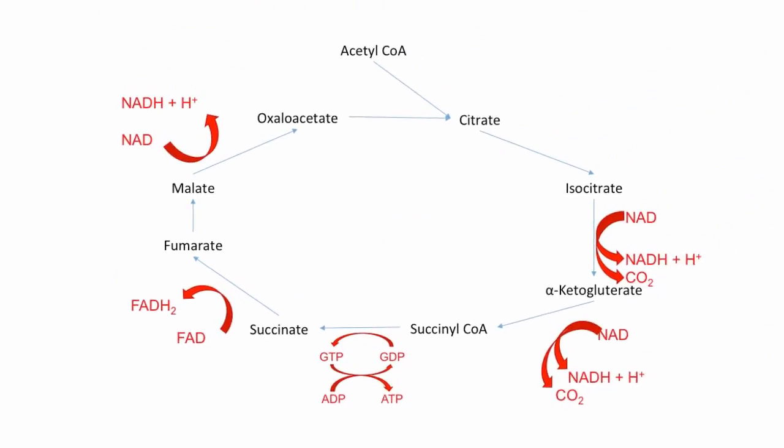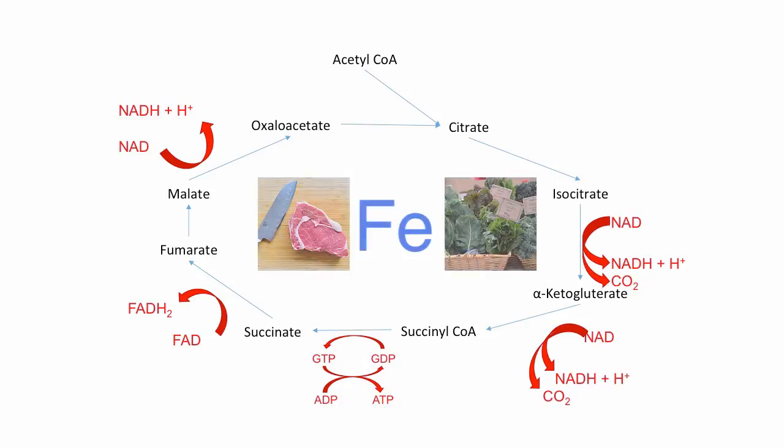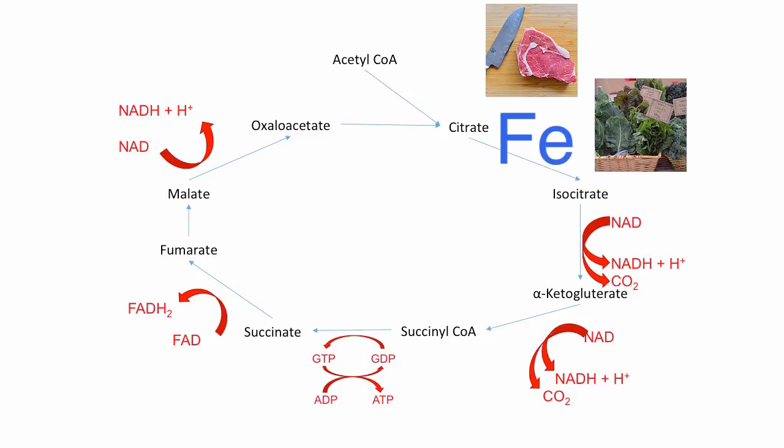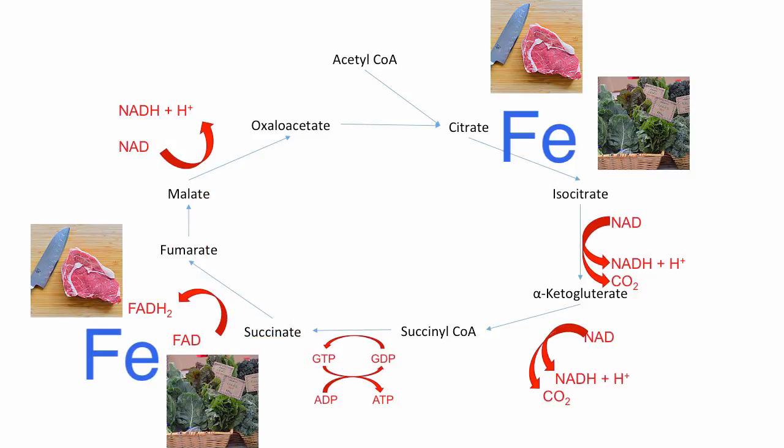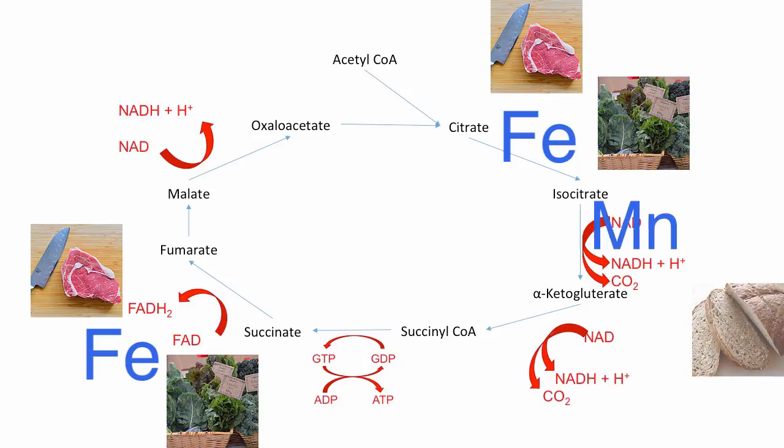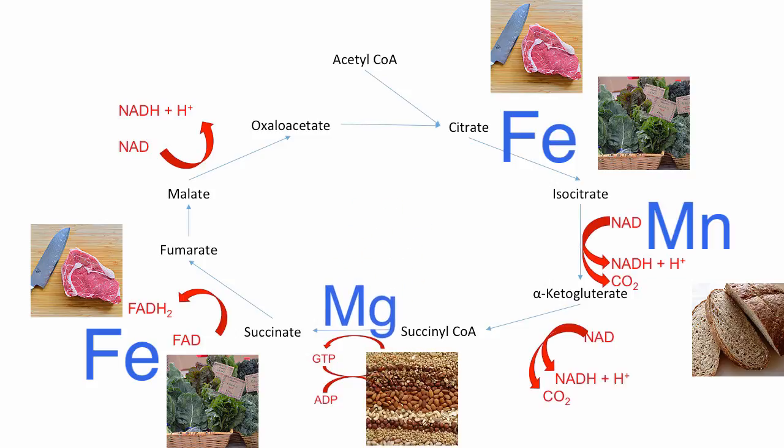Next is the minerals. Iron is used for two reactions: the citrate to isocitrate reaction and the succinate to fumarate reaction. The reaction of isocitrate into alpha-ketoglutarate is aided by the mineral manganese, and the reaction of succinyl-CoA into succinate is aided by magnesium.